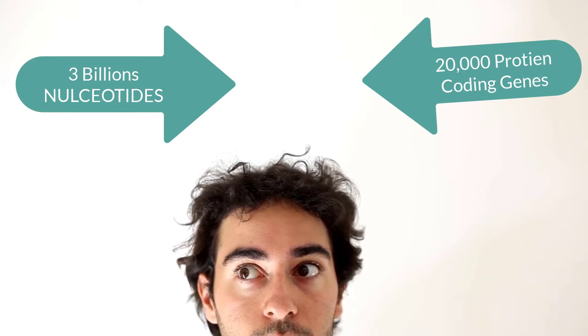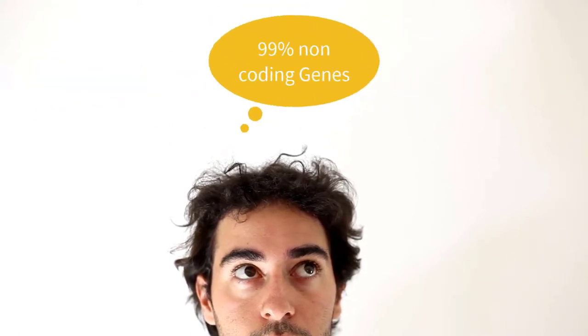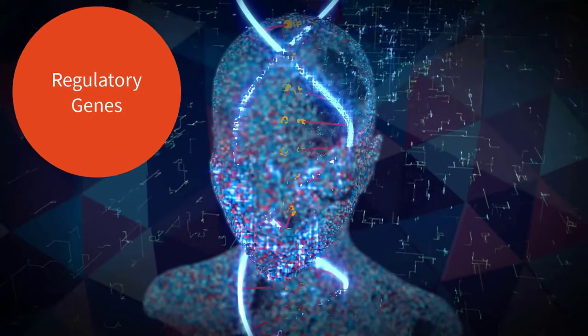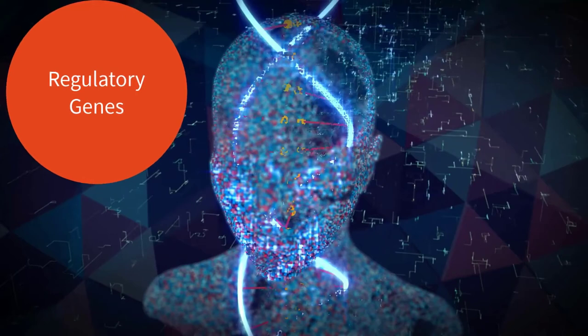The remaining 99% is non-coding DNA sequences that do not produce any proteins at all. Some are regulatory components that work as switchboards to control how other genes work.